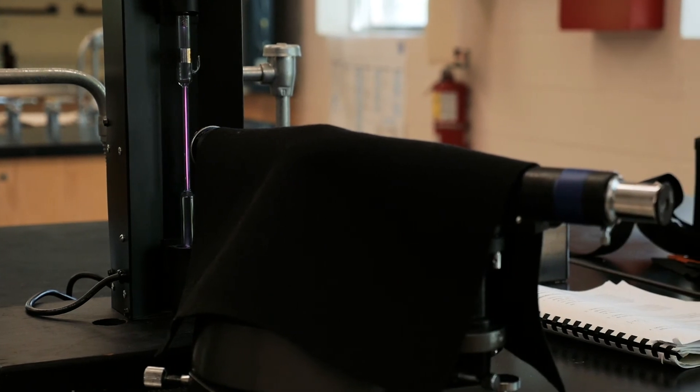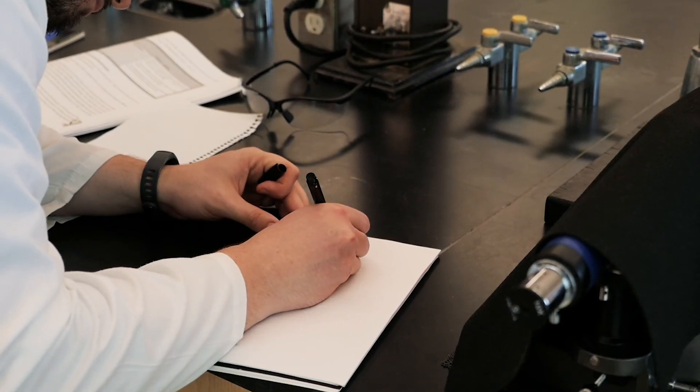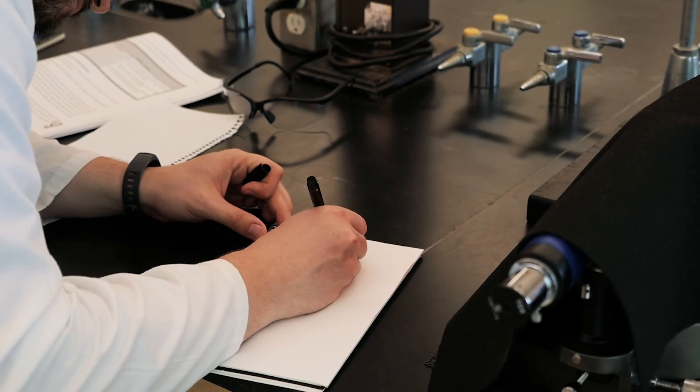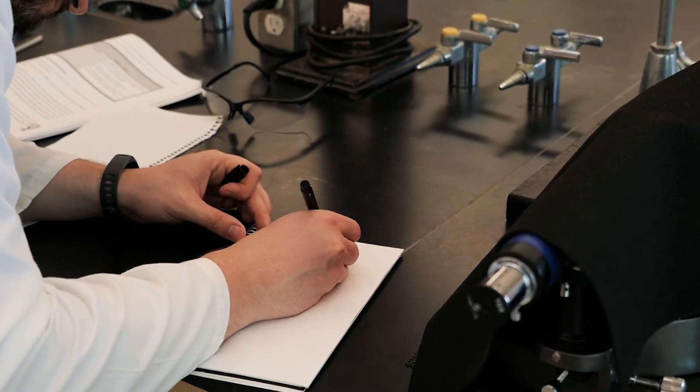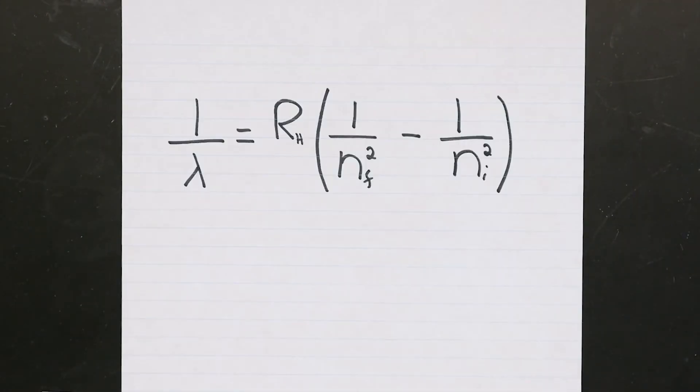Measure the diffraction angle for each of these three lines and determine what specific wavelength each of them correspond to. Now we know from class that these spectral lines observed for the hydrogen atom correspond to electronic transitions that obey the Rydberg equation.